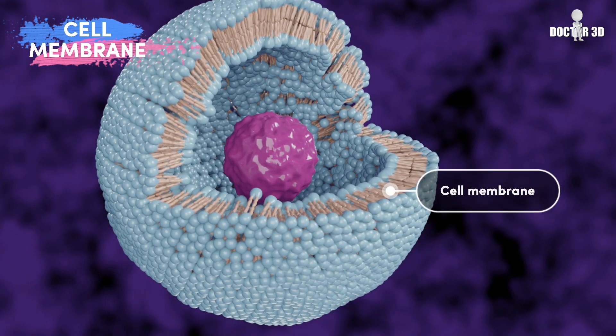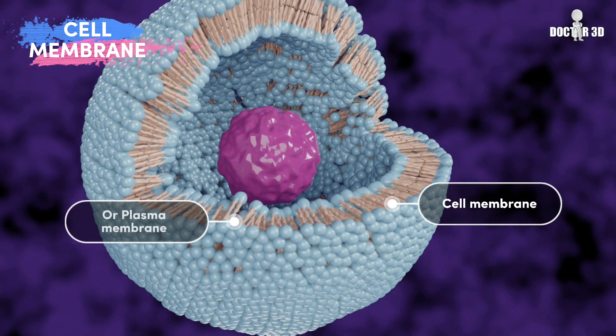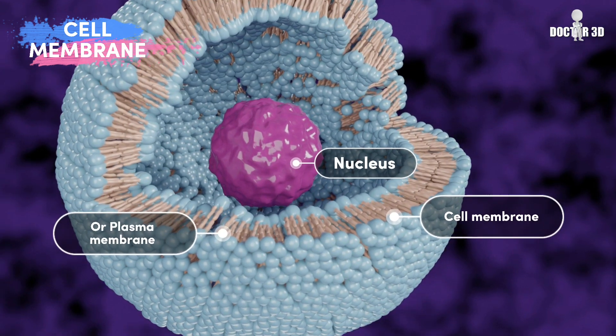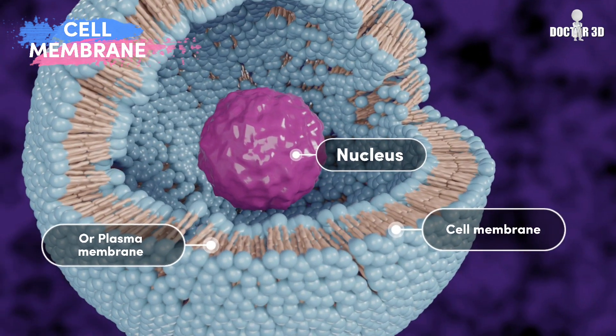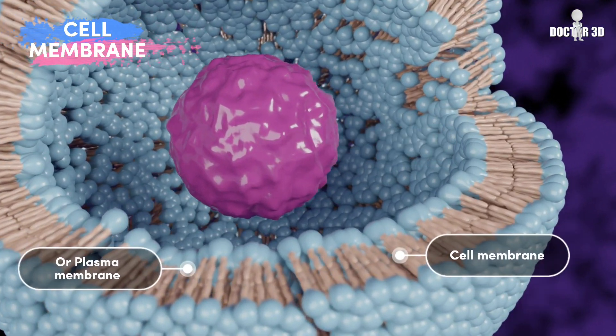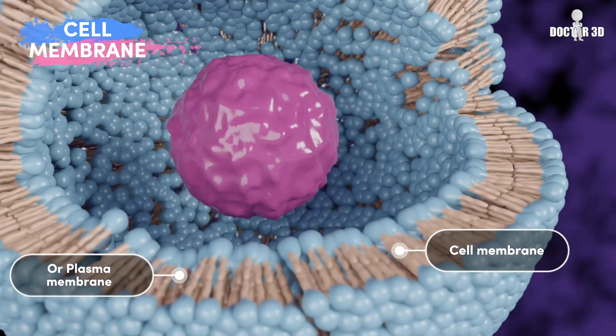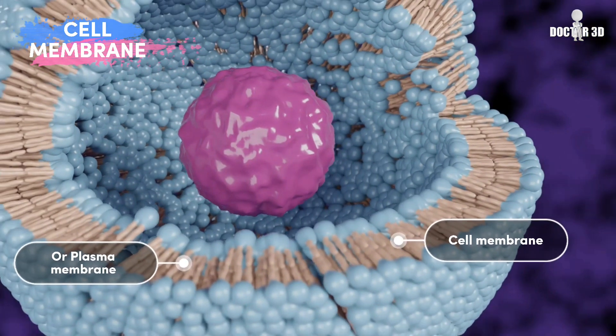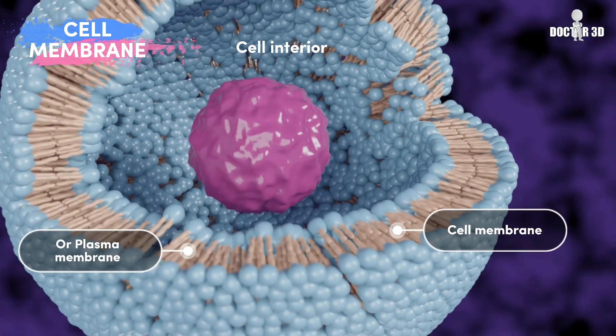The cell membrane, also called the plasma membrane, is the membrane found in all cells that separates the interior of the cell from the outside environment.